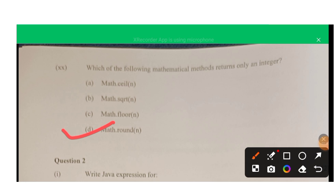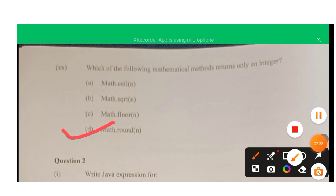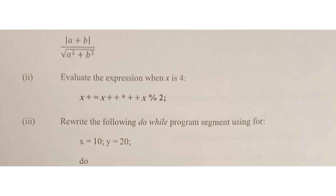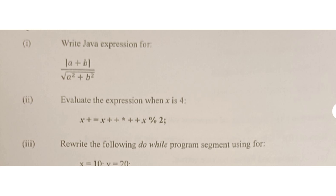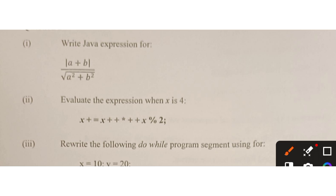Question twenty: which mathematical method returns only an integer? Option D — Math.round — is correct. Math.ceil, Math.sqrt, and Math.floor return values as double or float, not integer. Only Math.round returns an integer.